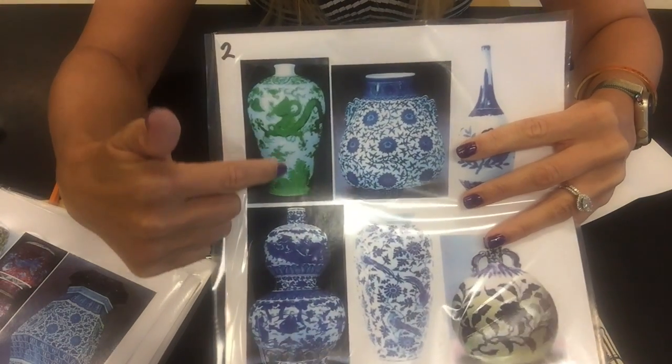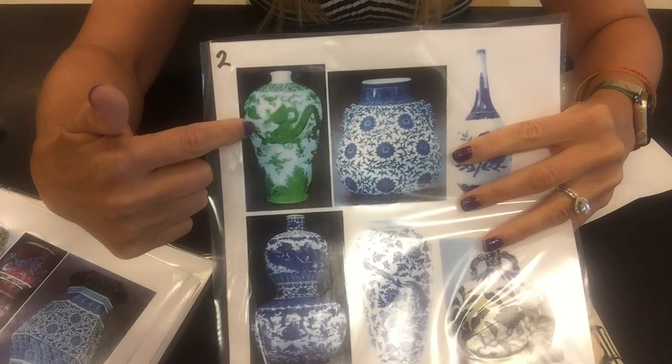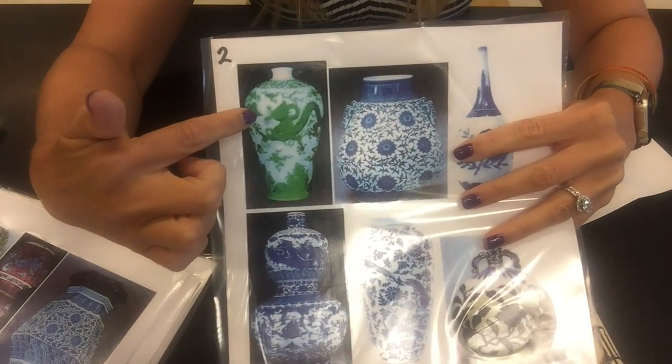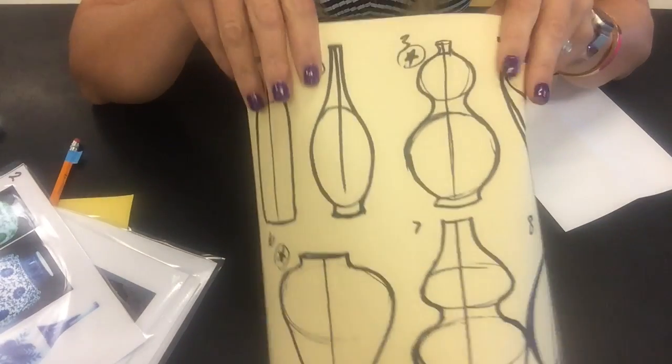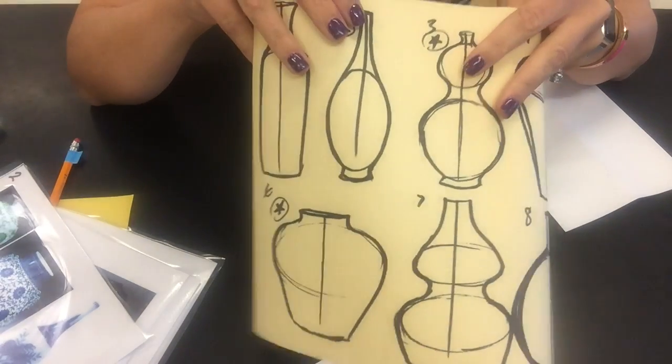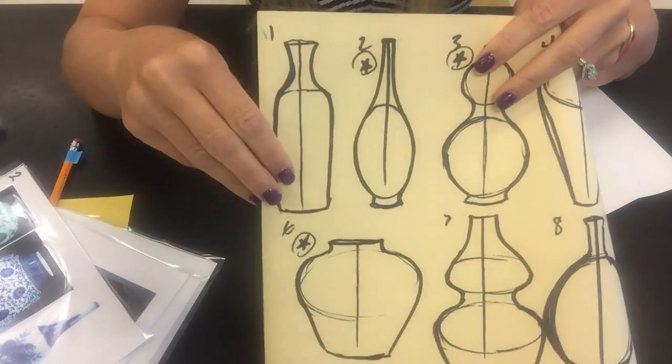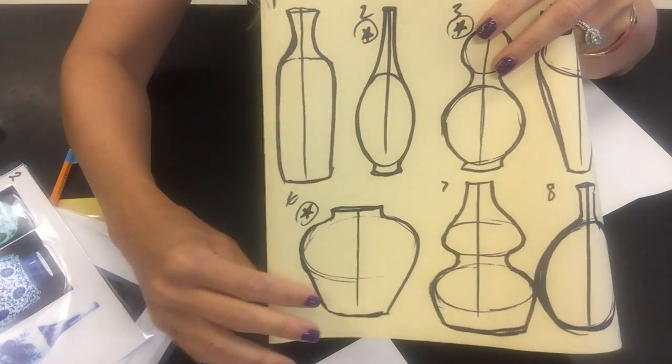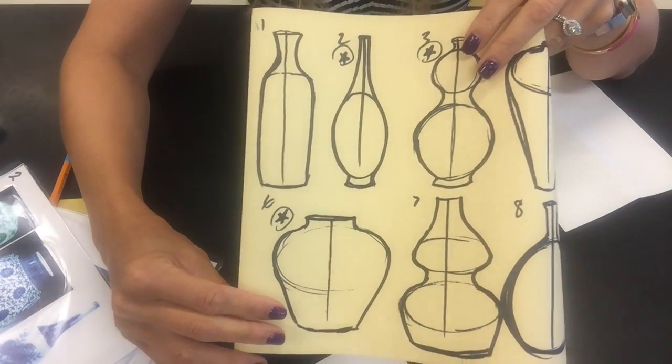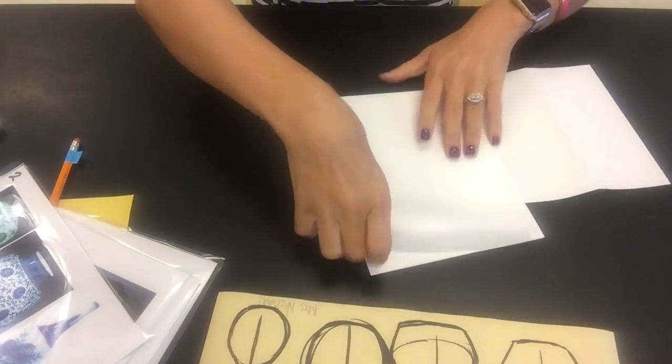So it's really hard to freehand draw things that are perfectly symmetrical. So we're going to use a little trick with folding our paper in half to do that for the vases for your final project. So I have two different sizes of paper for you guys to use: I have these larger pieces here and I have a couple smaller pieces.